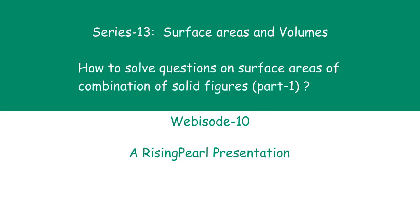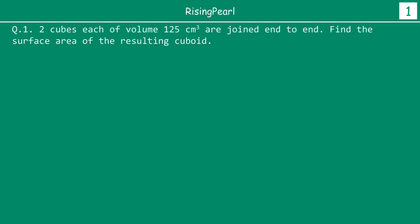Hello friends, welcome to RisingPearl.com. This is webisode number 10. Today we are going to look at how to solve questions on surface areas of combination of solid figures. This is part 1 because we are going to start from easy questions and then slowly move on to more difficult questions. So the first question goes like this: two cubes each of volume 125 centimeter cube are joined end to end. Find the surface area of the resulting cuboid.